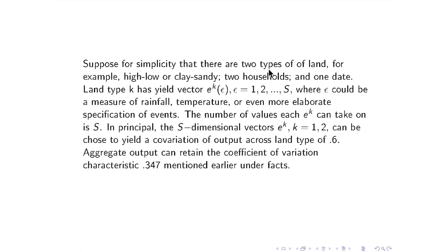Start off simple: there are two types of land — say high-low or clay-sandy — only two households, and only one date. Land type K has a yield vector that varies with shock epsilon, which can take on capital-S values. Epsilon is a measure of rainfall, temperature, humidity, or other events with beneficial or adverse consequences for the yield, as captured by how the yield of type-K land varies with those shocks — very similar to the notation used when we planted land with seed in the dynamics lectures.